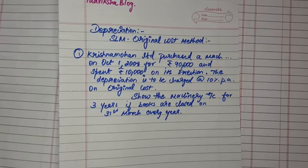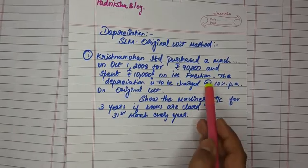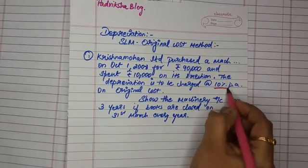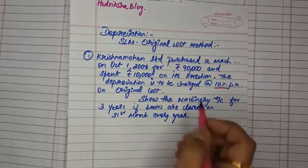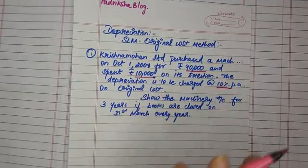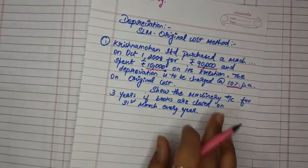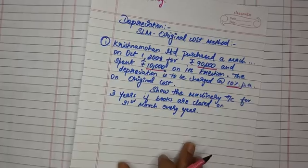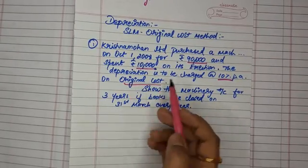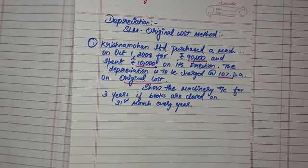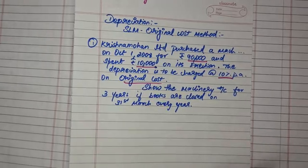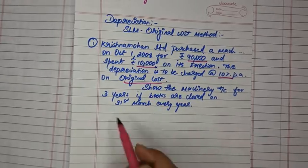So depreciation is 10% per annum, charged at 90,000 per annum. Erection charge is 10,000. Original cost. Now, machinery account open for 3 years.